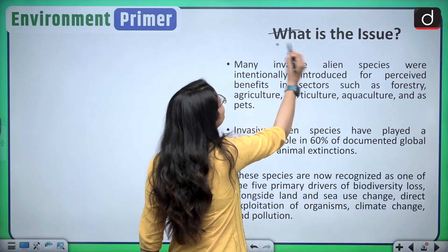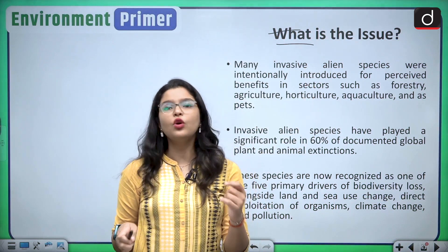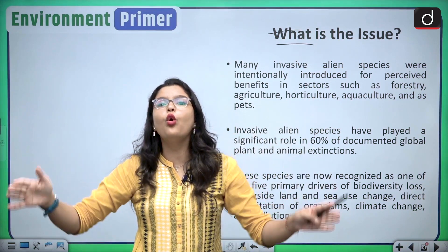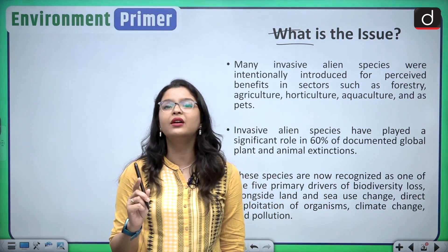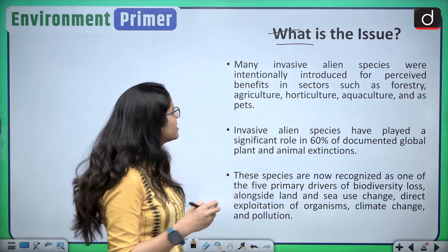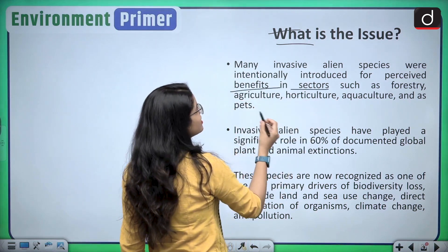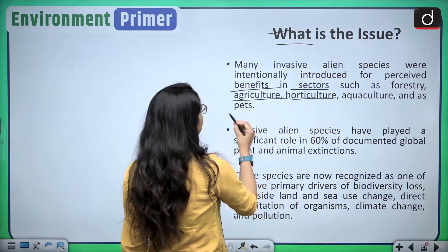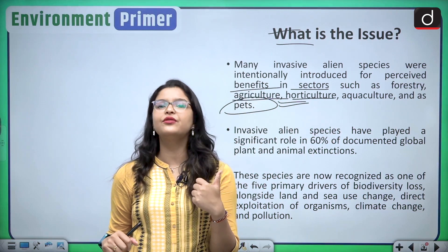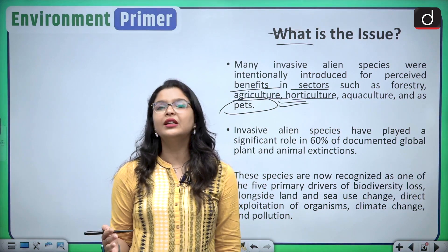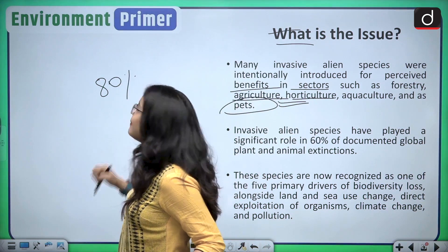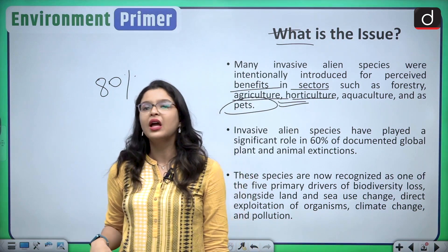How are they impacting the ecosystem? An invasive alien species can cover a whole lake and destroy the entire marine ecosystem by cutting the food supply. Humans introduce them out of their own selfish interest and for perceived benefits in sectors such as forestry, agriculture, horticulture, aquaculture, and even as pets. They did not realize the negative impact — nearly 80% of the documented impact of these invasive alien species is negative.